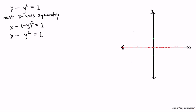And what do you notice? That this resulting equation is the same as the original one. So we have x-axis symmetry. They're equivalent equations.